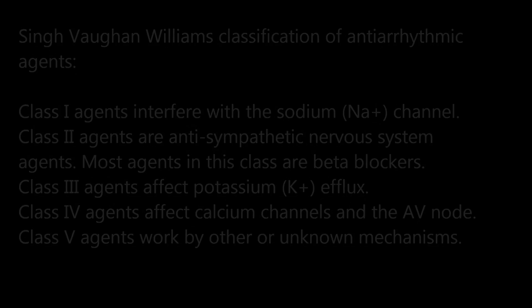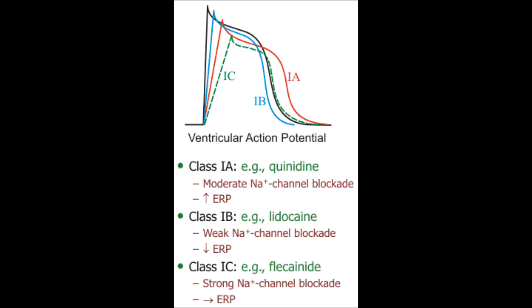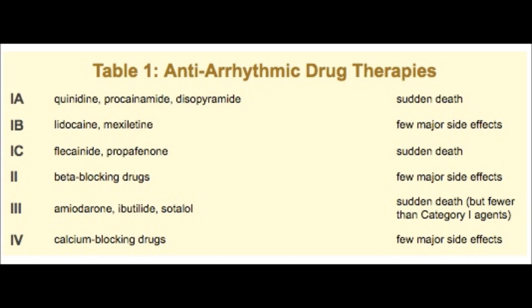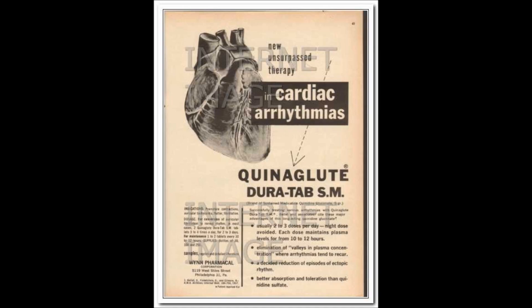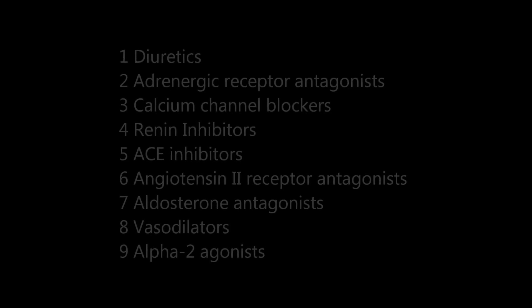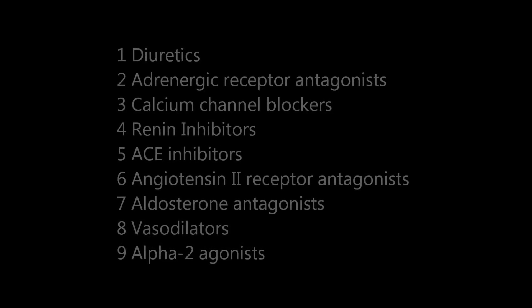Antiarrhythmics treat and prevent atrial or ventricular arrhythmias. Examples include flecainide, lidocaine IV, sotalol (Betapace), amiodarone IV or PO (Cordarone), procainamide IV or PO (Pronestyl), propafenone (Rythmol), and quinidine IV or PO (Quinaglute). Caution: most antiarrhythmics can potentially increase arrhythmias — notify the physician if increased ectopy is noted.